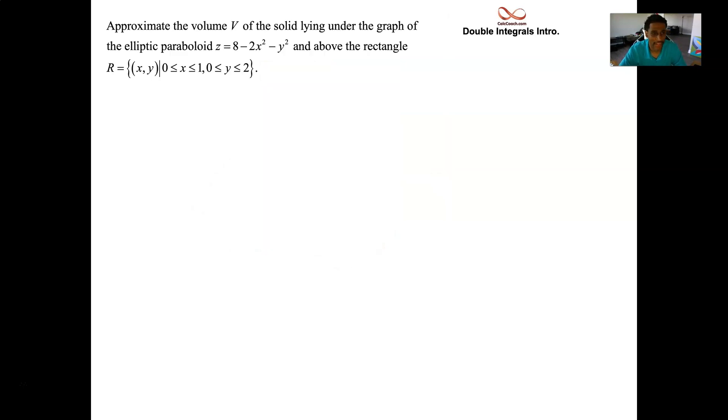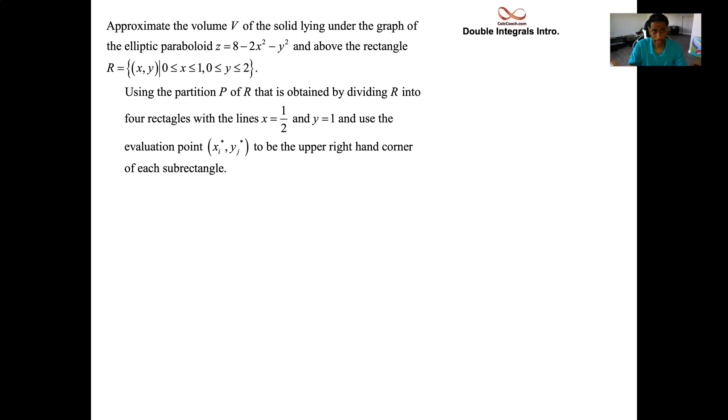Here's an example. Our job is to approximate the volume lying under the graph of an elliptic paraboloid z = 8 - 2x² - y² and above a rectangular region R in the xy plane. You'll be told which rectangular region you're using, how to partition that, how to subdivide it. You'll be told where to evaluate the function at. Use the line x equals half to cut the x interval down the middle, use the line y equals 1 to cut the y interval down the middle. So you have four different rectangles. When it's time to evaluate the function, go to the upper right corner.